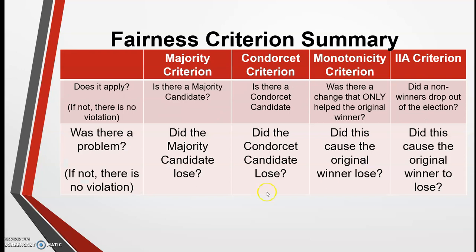Once you determine that a criterion does apply, then you ask yourself: if there is a majority candidate, did they win? Because if they won, then there's no violation. If they lost, that's when the violation occurs. If you have a Condorcet candidate, did they win? If they did, then no violation occurred. But if they lost, then a violation occurred. And then you would just continue this process. If the monotonicity criterion applies, did it cause the original winner to lose? If so, it's a violation. And if the IIA applies, did that cause the original winner to lose? If so, it's a violation.